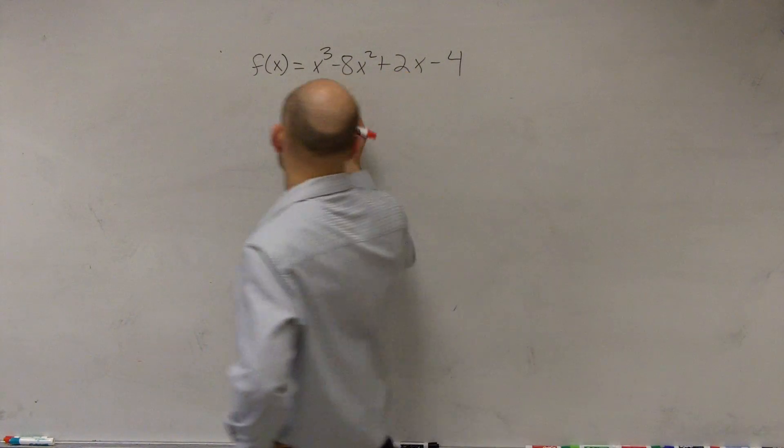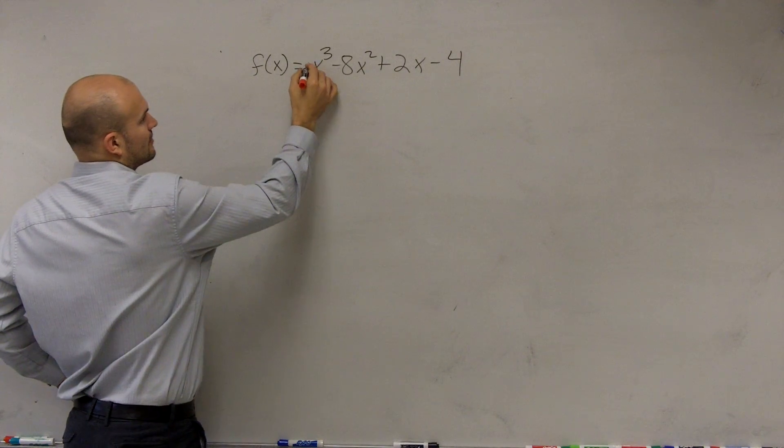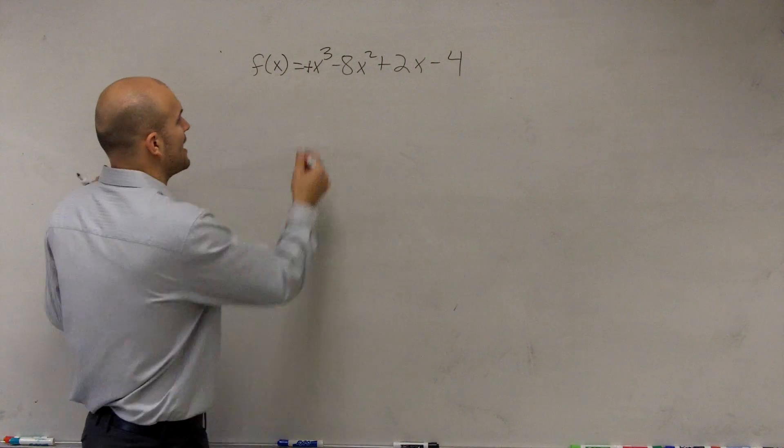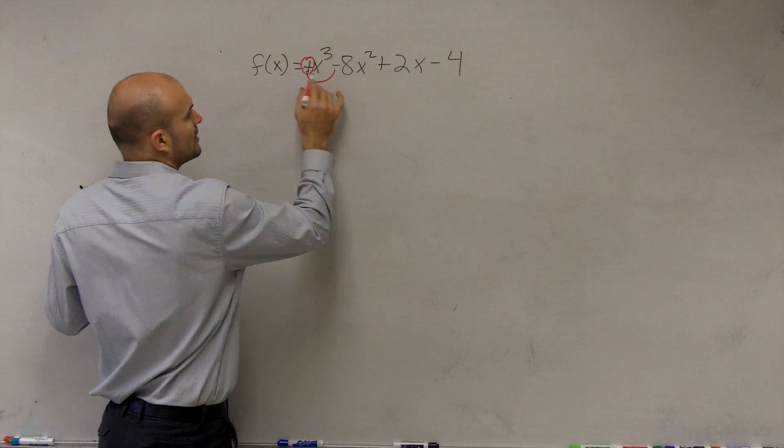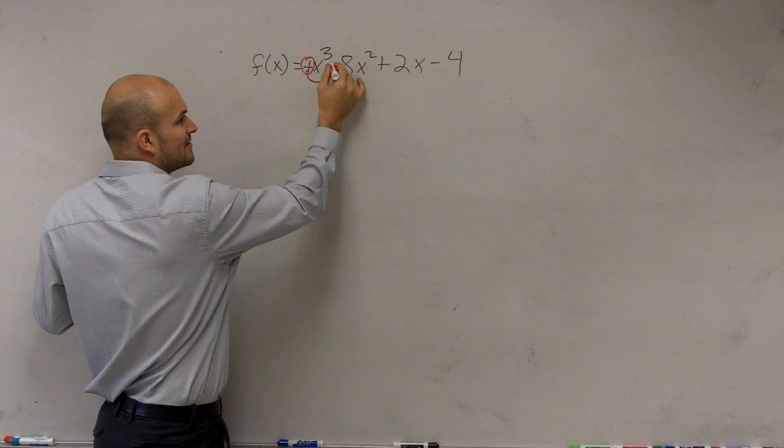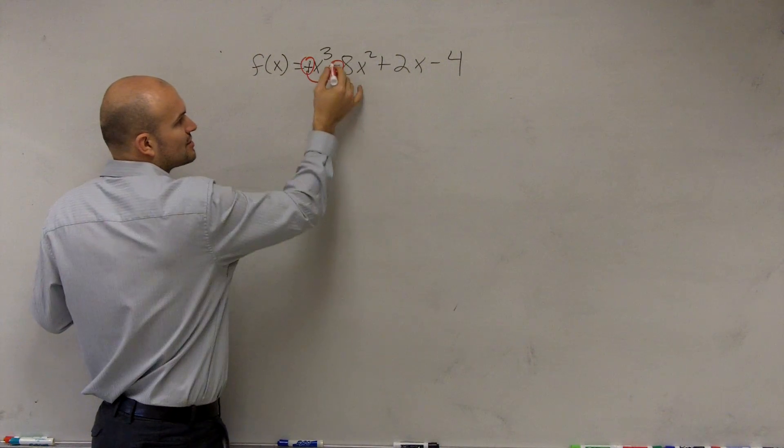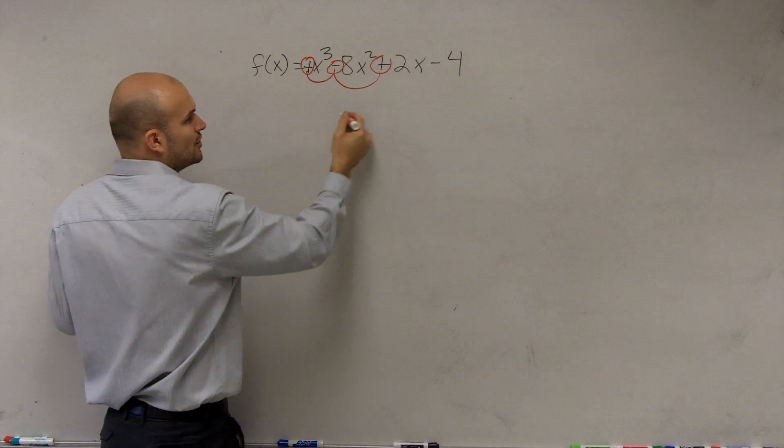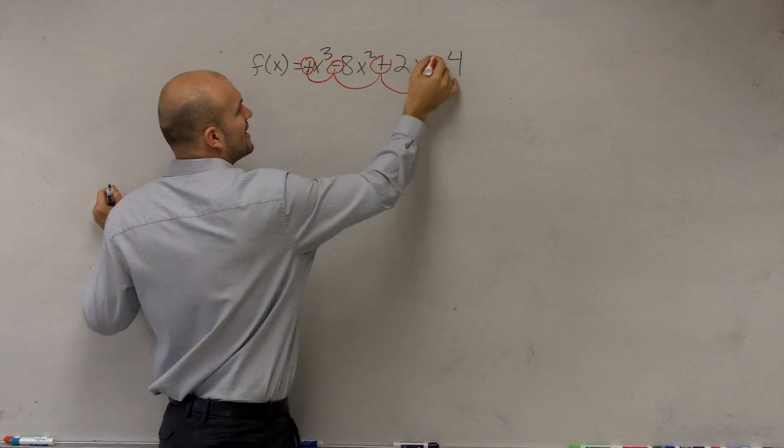So what I look at is I notice, since this is x³, I know this is positive. So what I'm going to do is I'm going to count how many sign changes do we have. Well, we go from a positive value to a negative value. That's one sign change. Then we go from a negative to a positive. That's 2. Then we go from a positive again to a negative. That's 3.